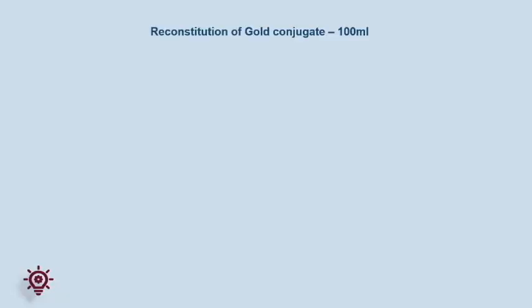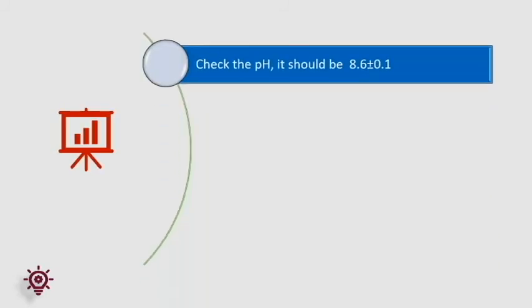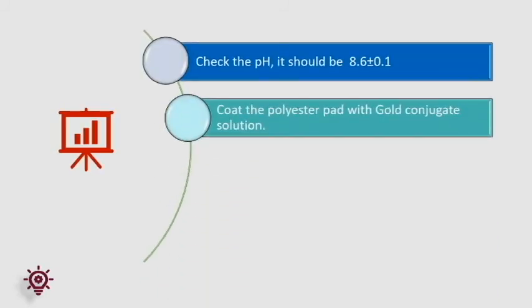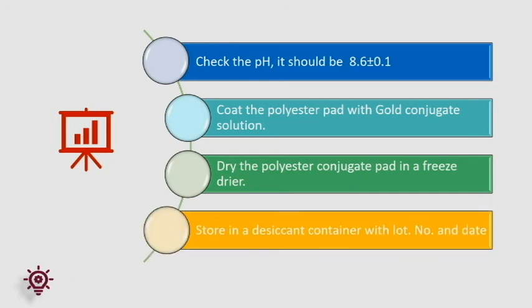Reconstitution of gold conjugate: prepare 5 millimolar borate buffer pH 8.6 using disodium tetraborate and boric acid. Weigh the required quantities of sucrose, trehalose, and BSA. Add the required volume of borate buffer and heterophilic blocking reagent slowly and mix to dissolve completely. Add the required amount of malaria antibody conjugate with mixing. Check the pH — it should be 8.6 plus or minus 0.1. Coat the polyester pad with gold conjugate solution. Dry the polyester conjugate pad in a freeze dryer. Store in a desiccant container with lot number and date.